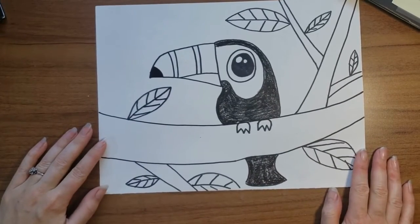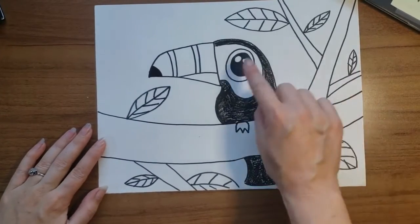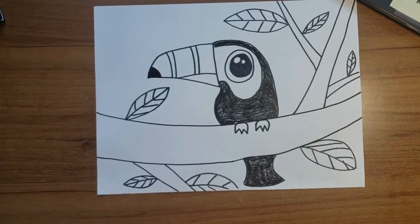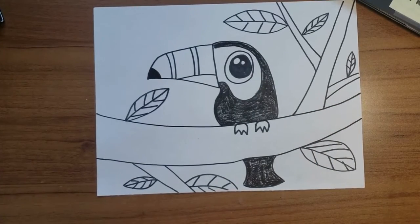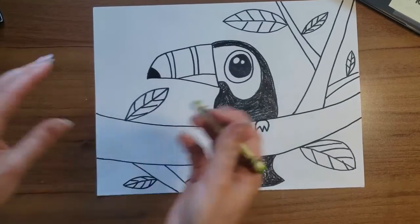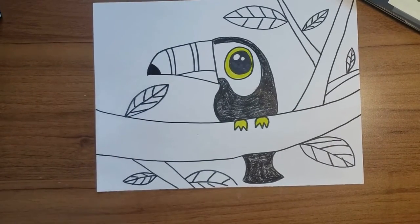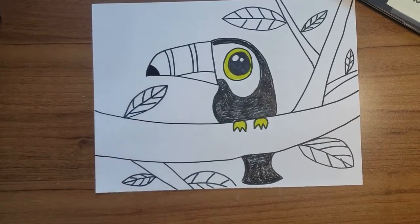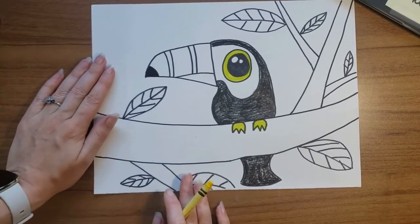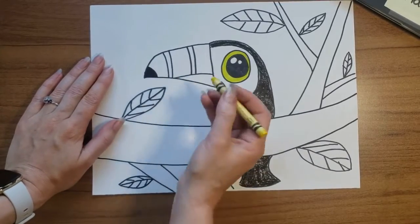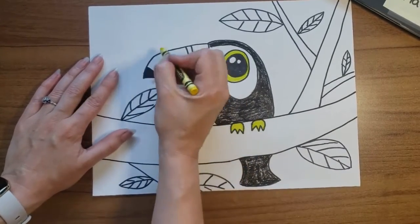Now that I have my whole toucan colored I'm going to color his eye. I think I want to use a nice green color for his eye. Now we're going to get a nice yellow for his beak, and I think I want to make his stripes red and orange.